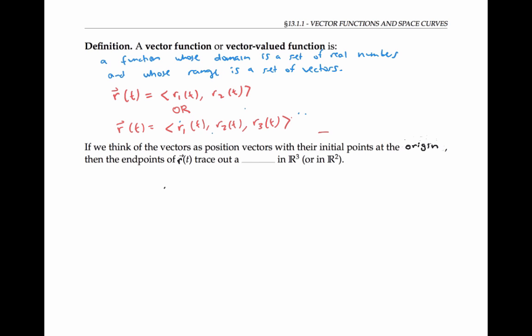If we think of the vectors as position vectors with their initial points at the origin, then the endpoints of the vectors r of T trace out a curve in R³, or in R², if our vectors are two dimensional vectors.